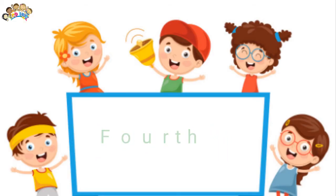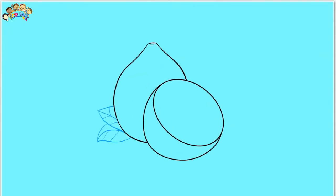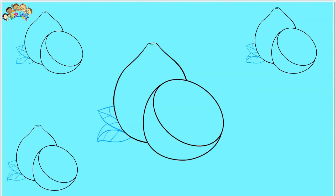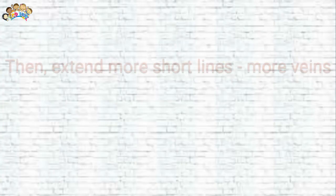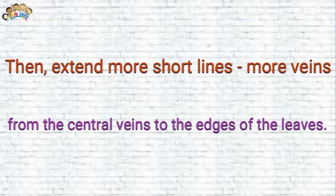Fourth, draw two leaves beneath the lemons. Begin by extending a pair of curved lines from the larger lemon, meeting in a point. Then, extend another set of lines, one from the lemon and one from the previous leaf. Allow these to meet at a point. Draw a line down the center of each to represent the leaf veins. Then, extend more short lines for more veins from the central veins to the edges of the leaves.